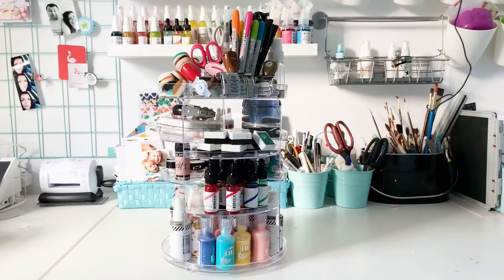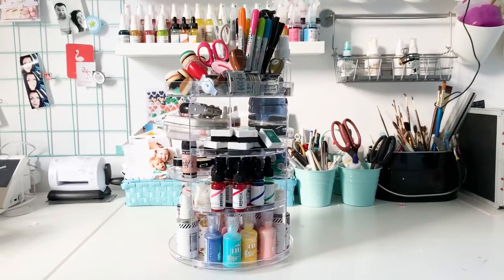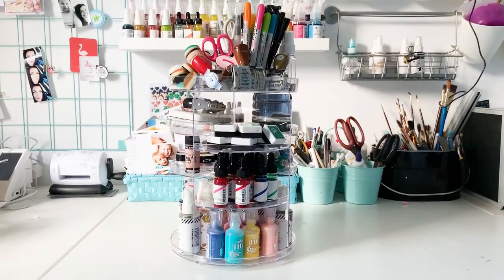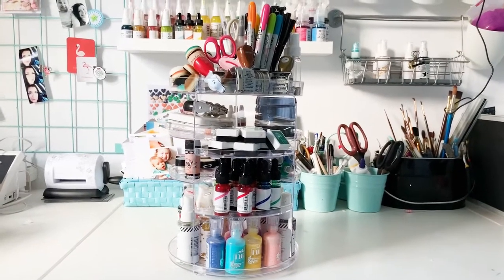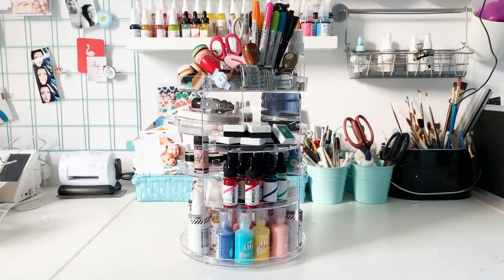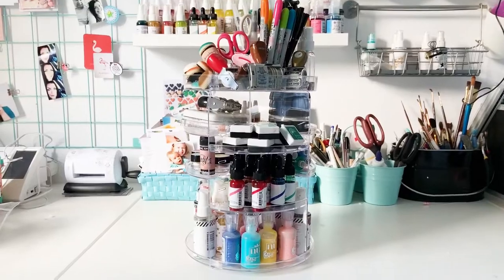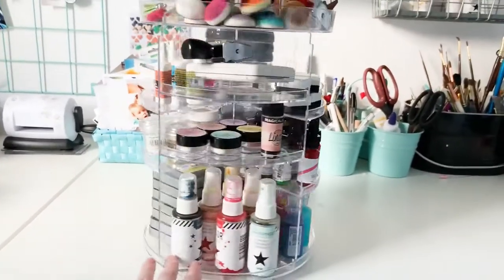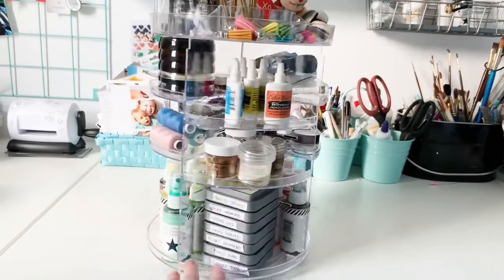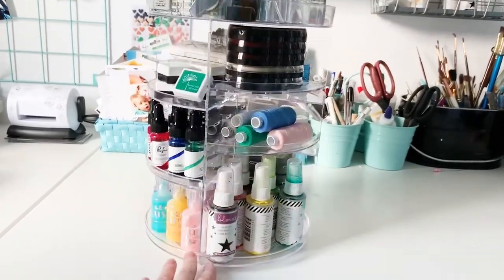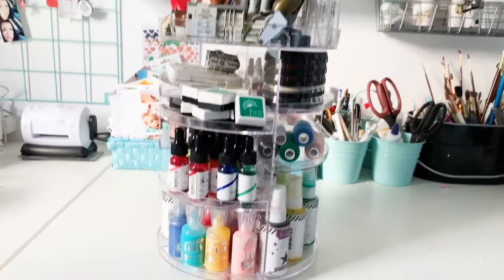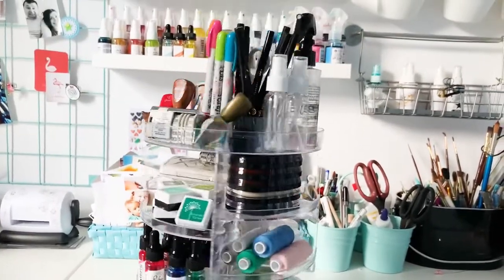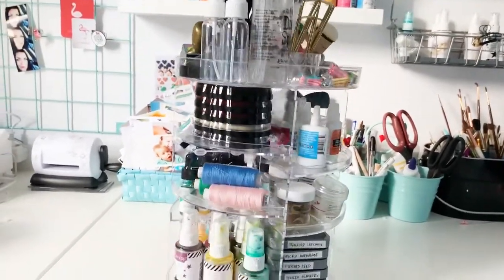This is how the craft station looks like when it's assembled and filled with all the goodies. I will quickly show you what I've got here. The big feature of the craft station is that it can rotate, so you can easily grab everything that's inside, even though it's on the back. You just rotate and grab whatever you want.